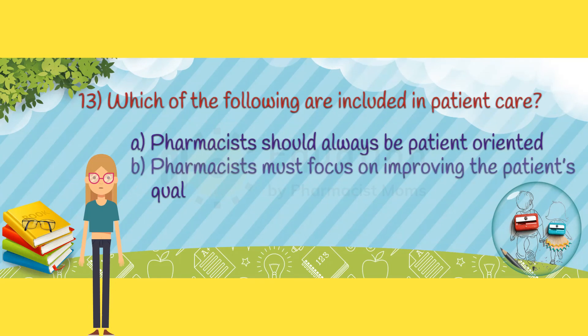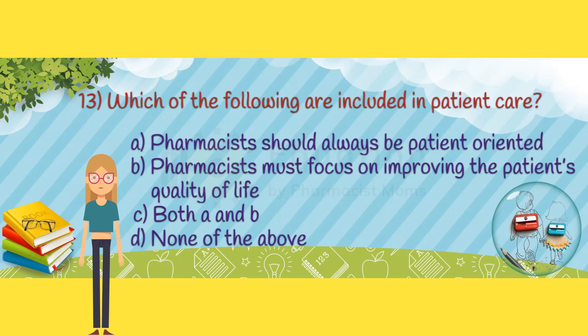Question 13. Which of the following are included in patient care? Option A: pharmacists should always be patient oriented. Option B: pharmacists must focus on improving the patient's quality of life. Option C: both options A and B. Option D: none of the above.